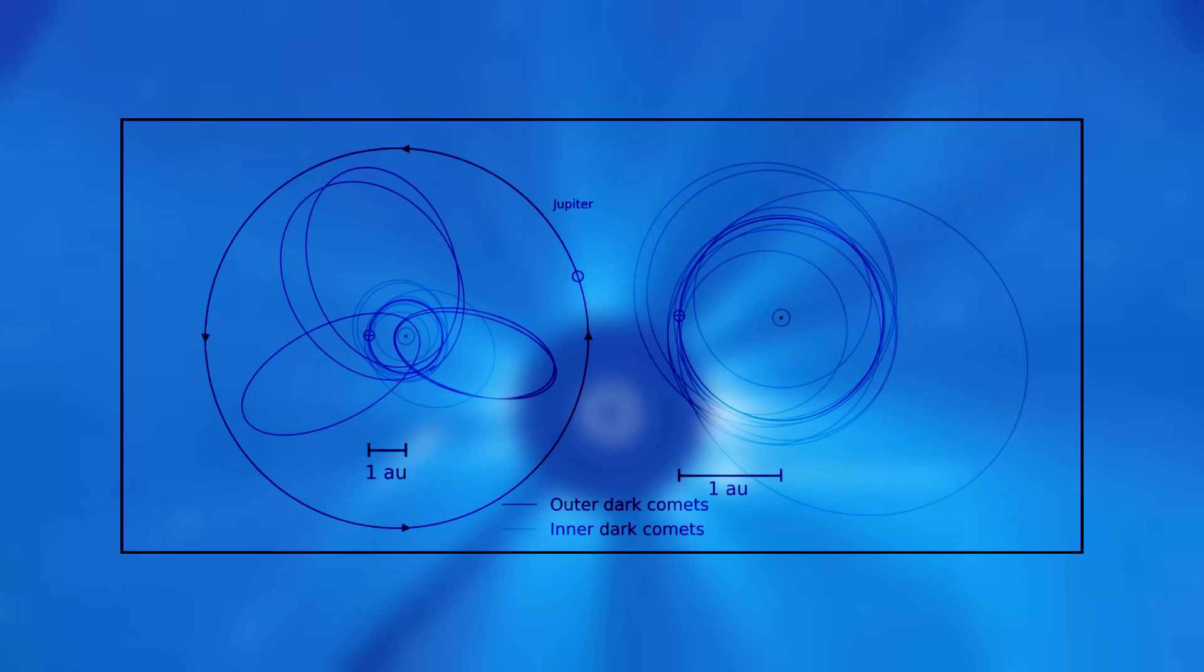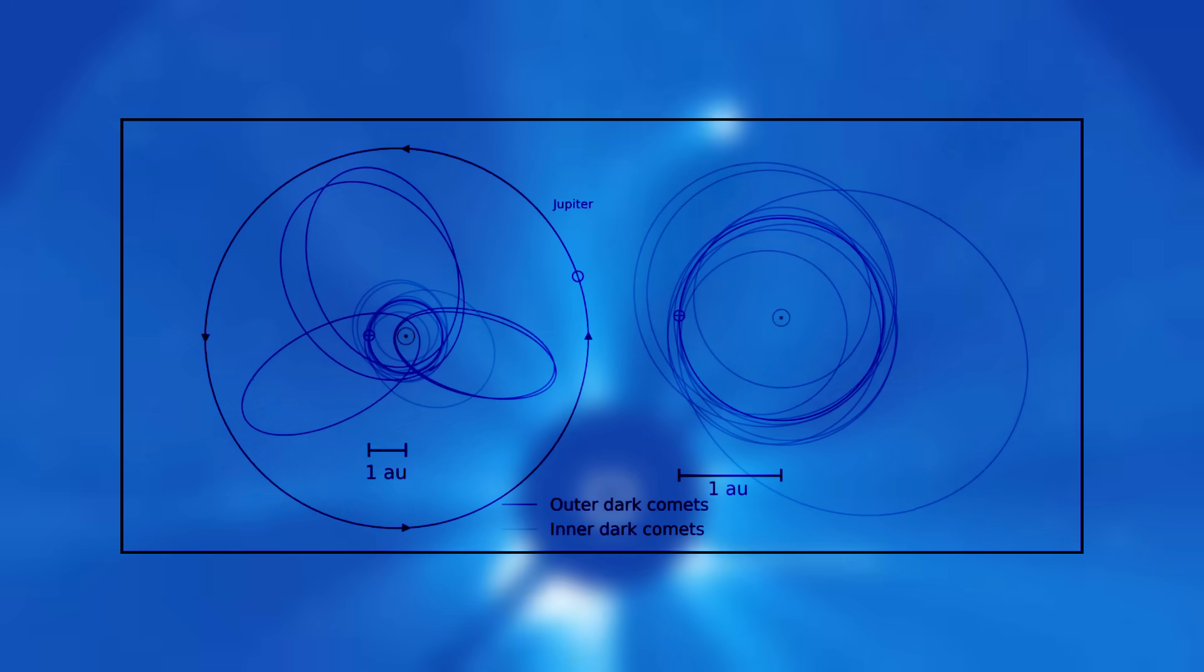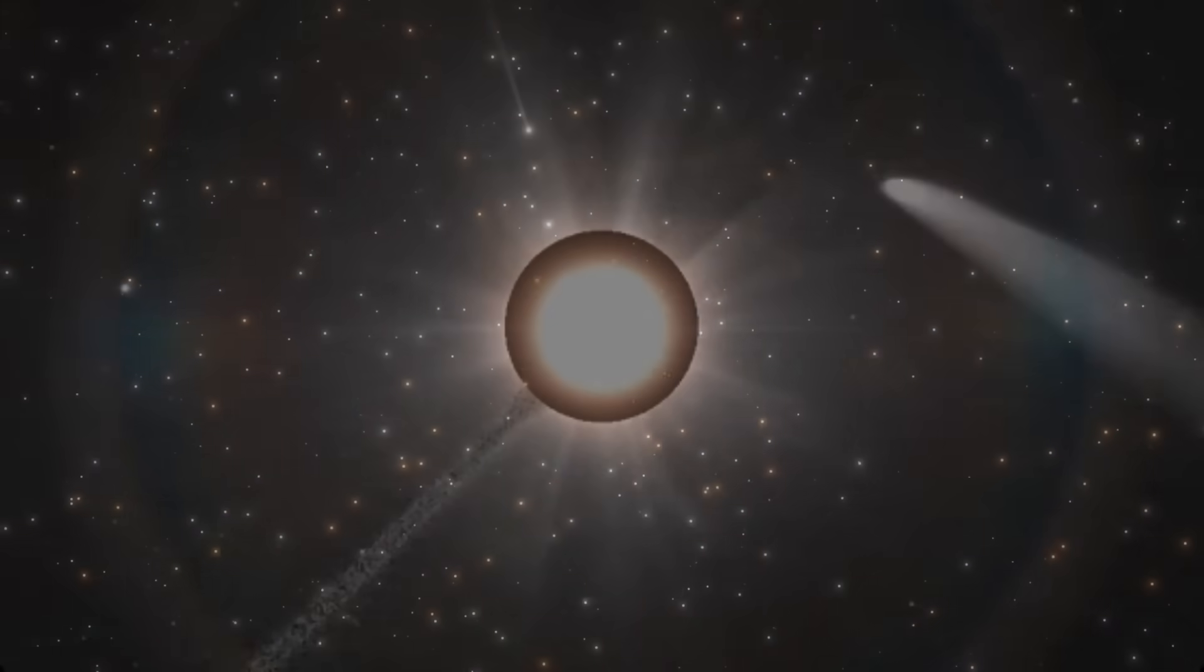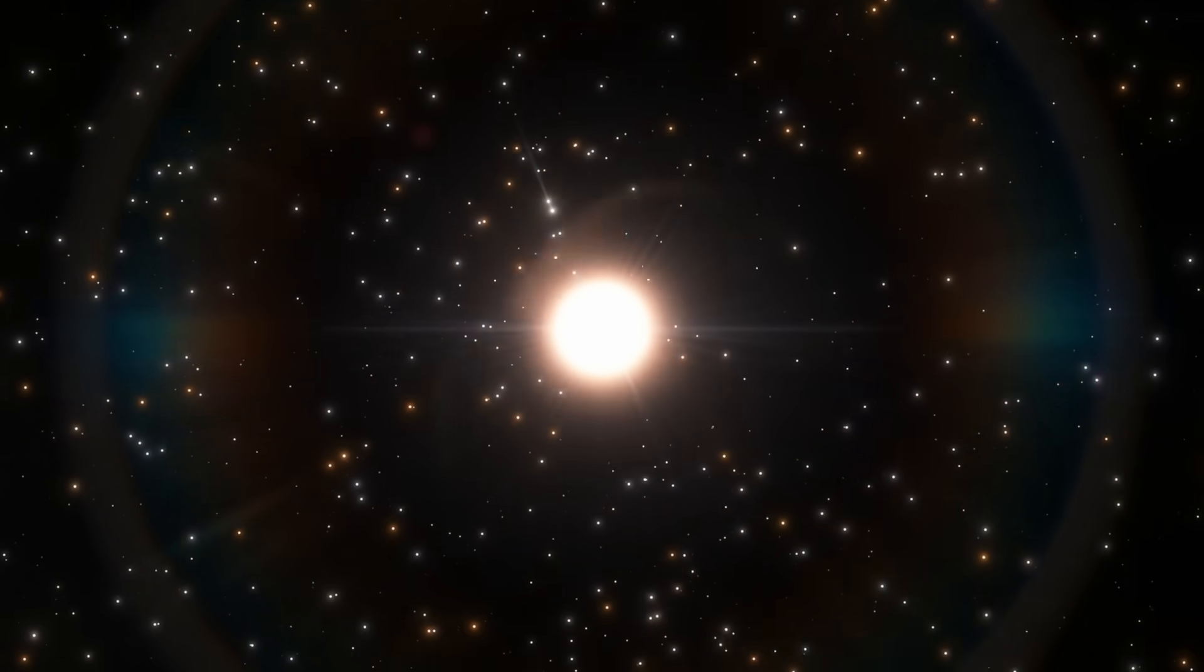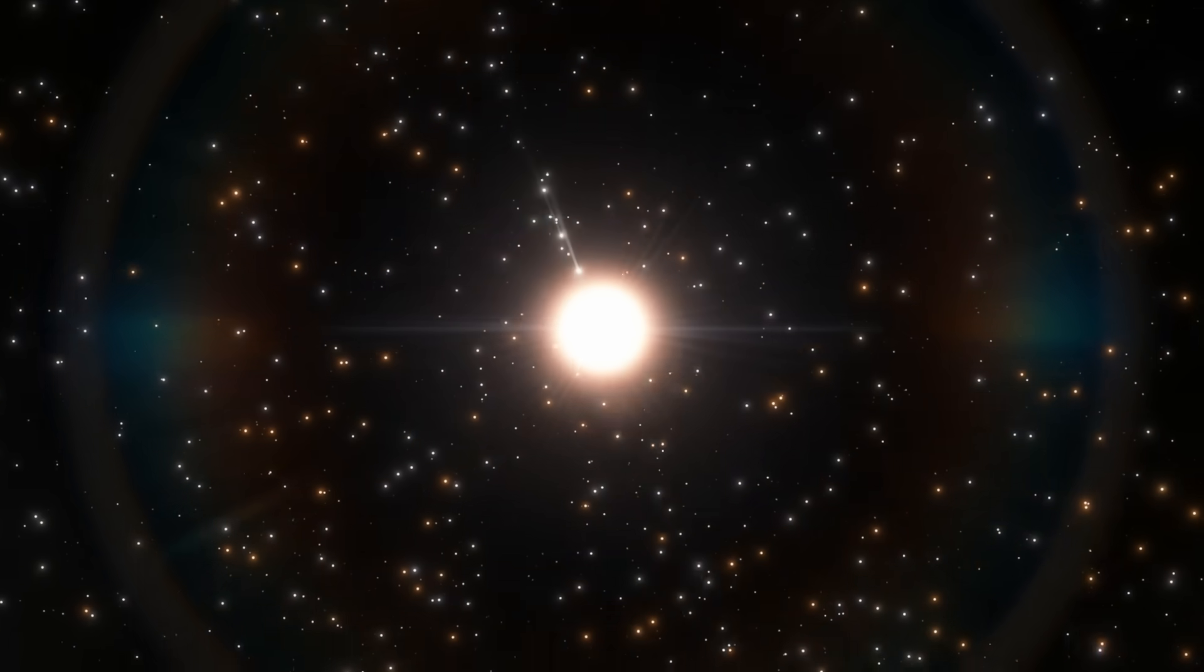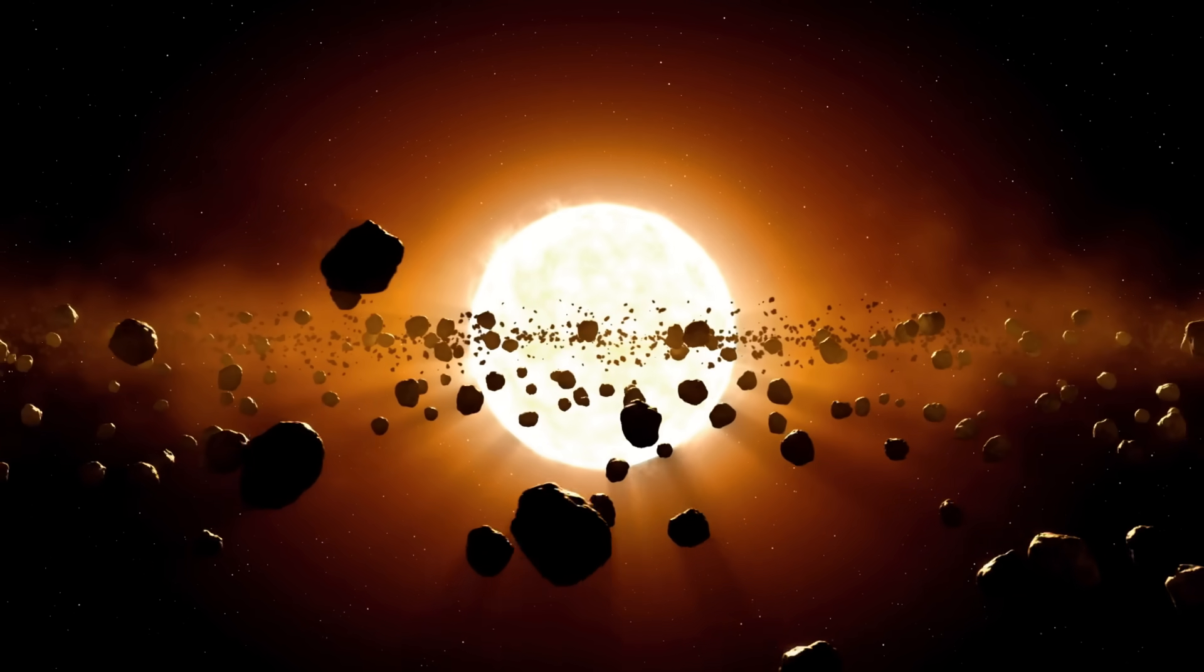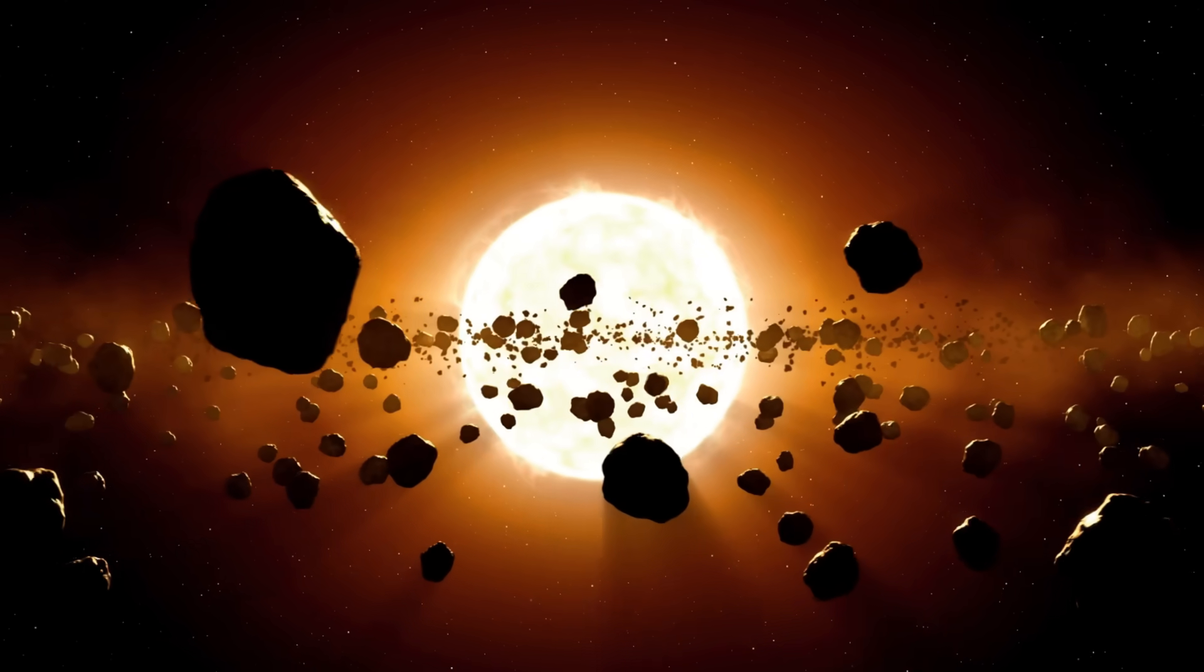Since their study, astronomers have uncovered a growing family of these stealthy bodies within our solar system. All share the hallmark of dark comets. Measurable outwards jet forces with no dust or gas detected, implying invisible, volatile-driven thrust. So yes, these objects have gone from a hypothesis to a recognized class of small bodies in our solar system.